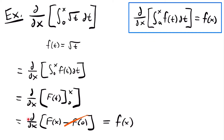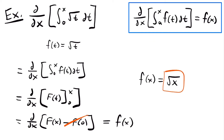Now that we've found that the derivative equals f of x, we can plug x into our function f of t and find the answer. So f of x will be equal to the square root of x — we plugged x into the square root of t. That would be the answer to this problem. While you could skip the work by just plugging the upper bound into the function, that's not always going to work in the future, so it's good to show this work.